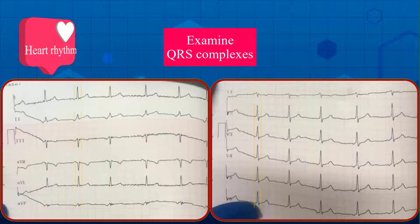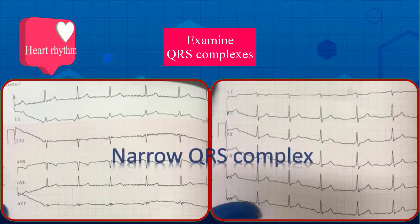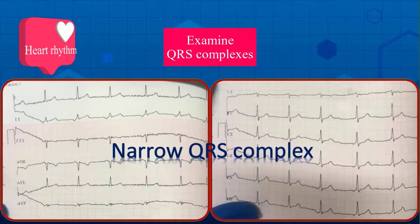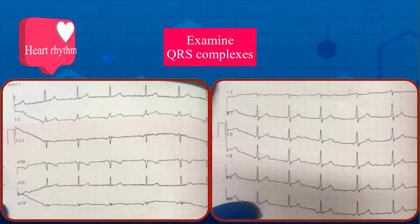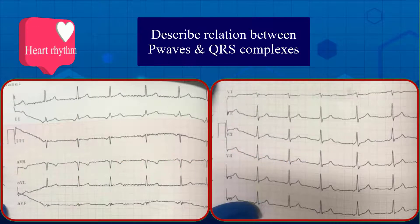Two: locate and examine QRS complex morphology. Here the QRS complexes are uniform; the duration is less than 100 milliseconds, so the complexes are narrow. Three: describe the relationship between the QRS complexes and P waves using the P-QRS ratio and intervals — including RR interval, PP interval, and PR interval.